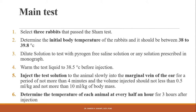Now the main test. Select the three rabbits that passed the sham test for the main test. Determine the initial body temperature of each rabbit; it should be between 38 to 39.8 degrees centigrade. Afterward, dilute the solution to test with pyrogen-free saline solution or any solution specified in the official monograph.